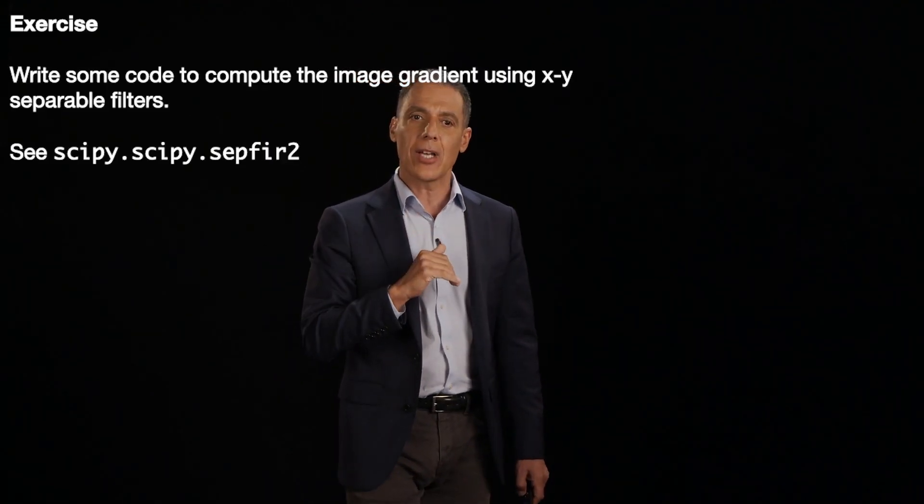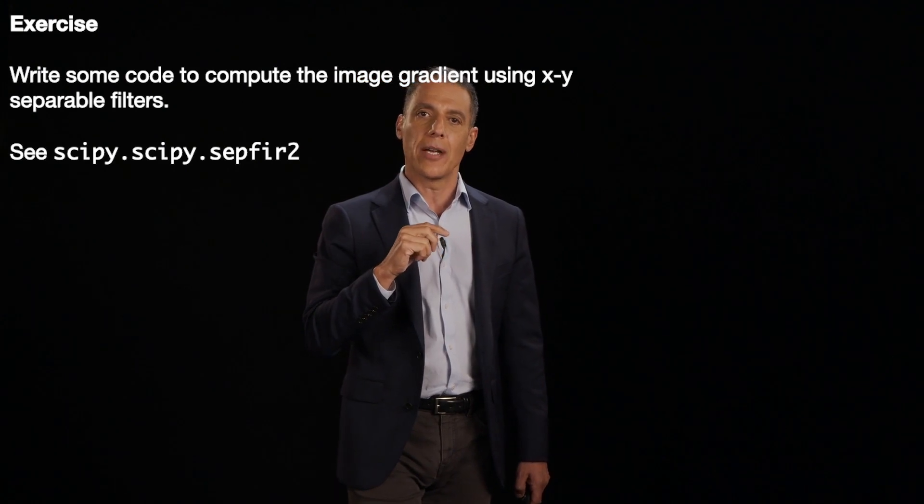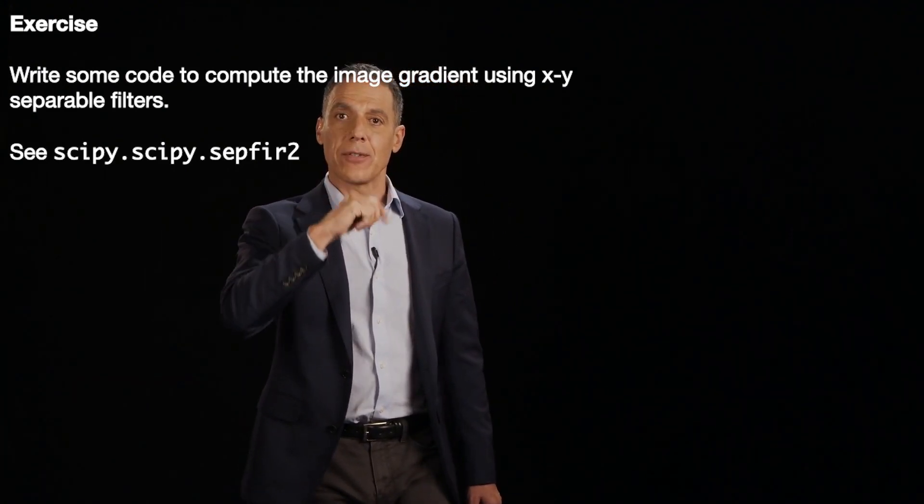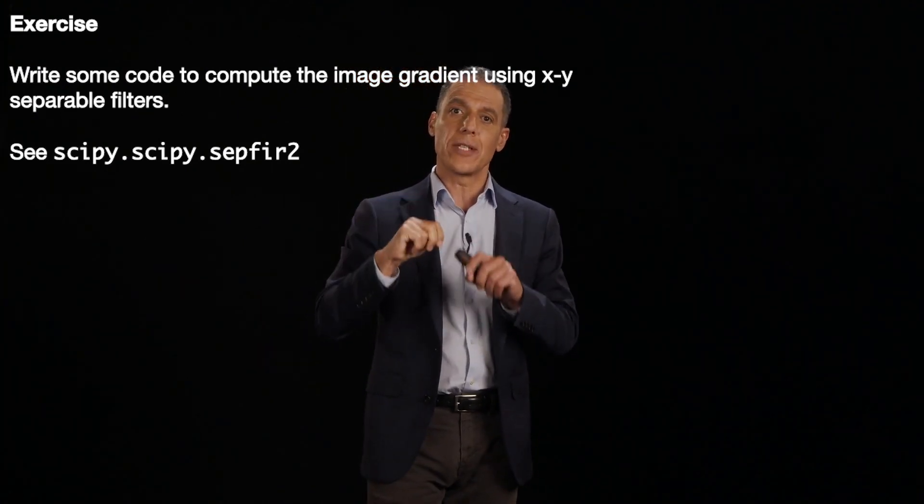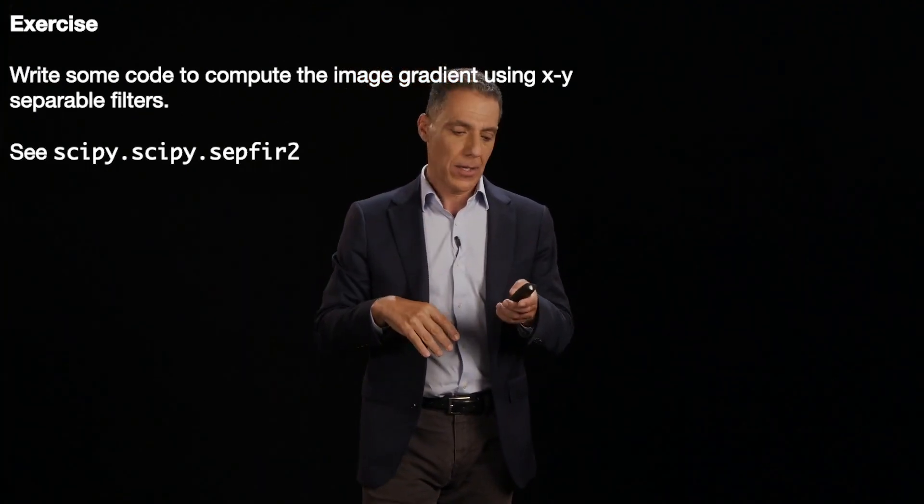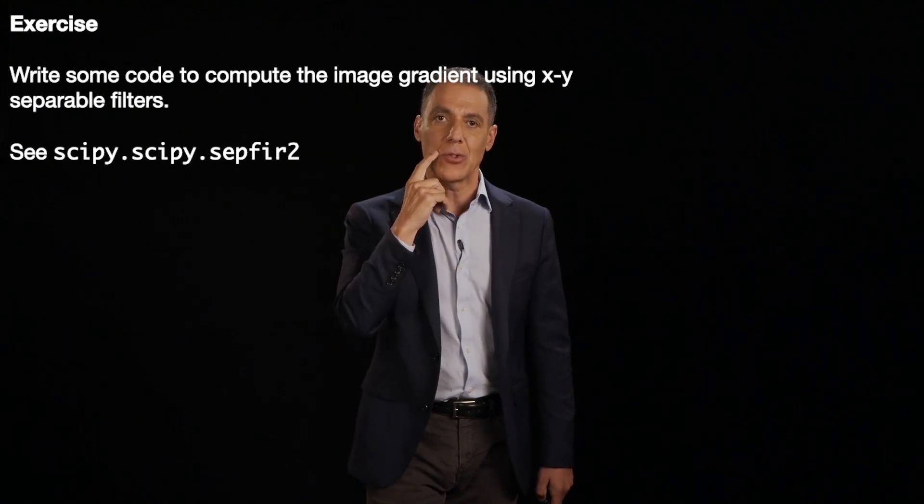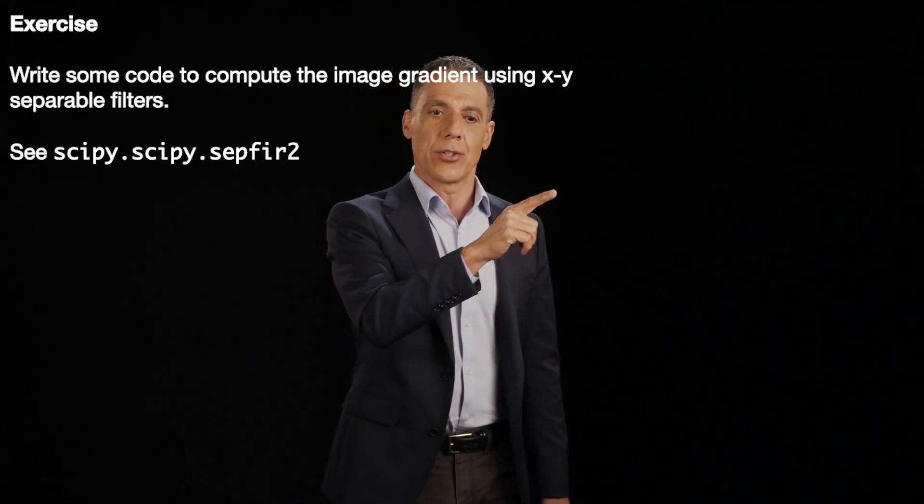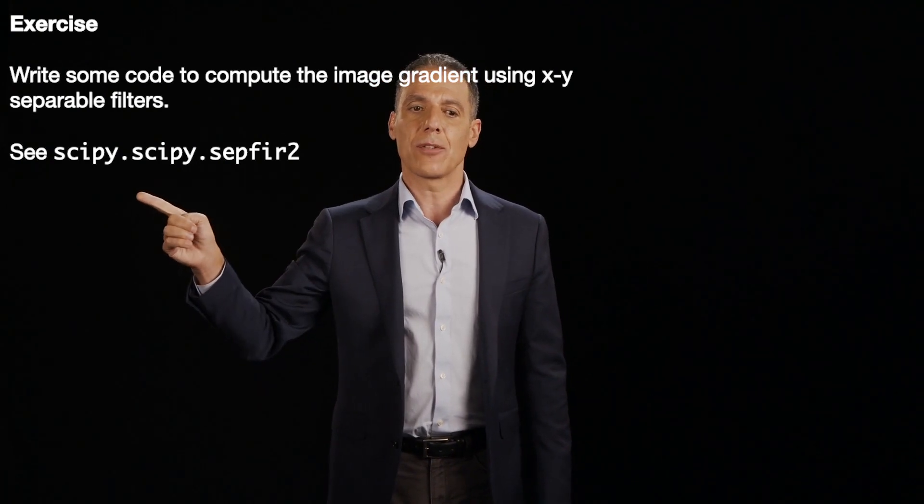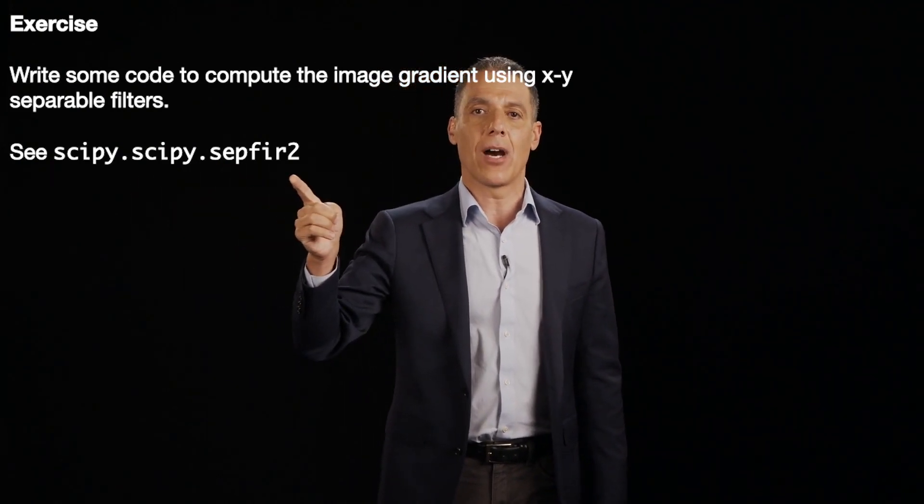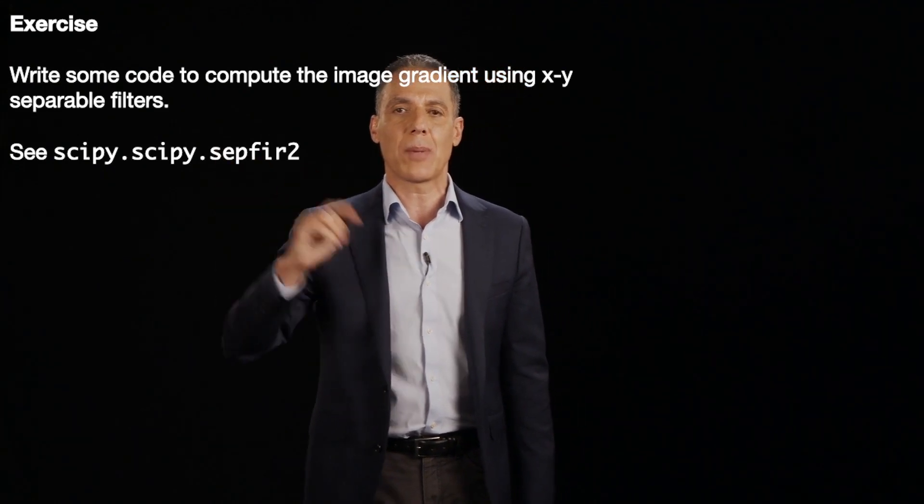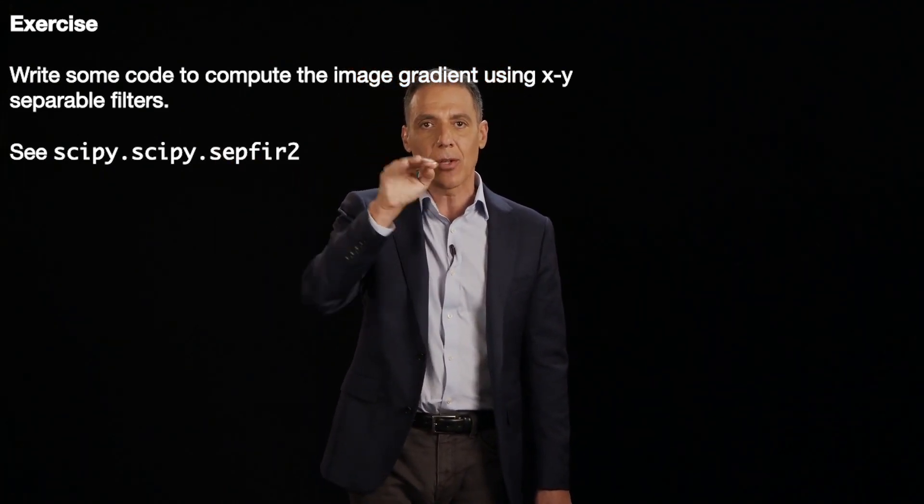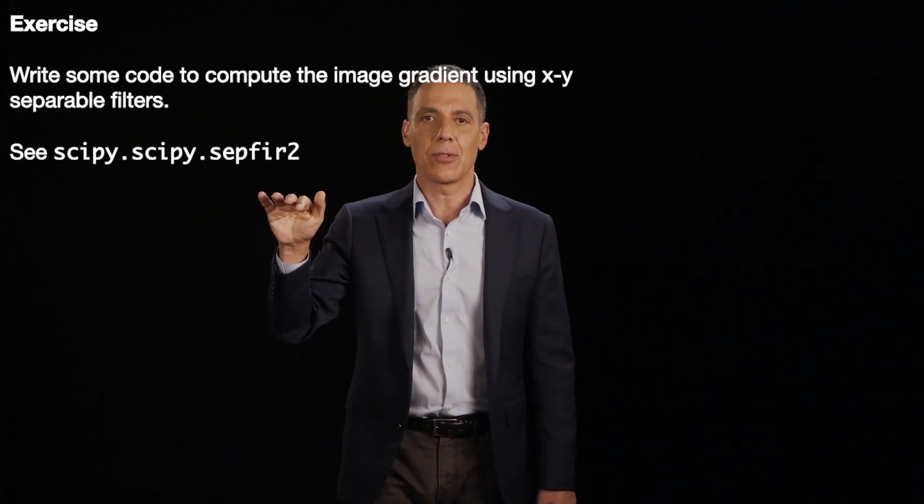Alright. So we're going to do another exercise, and I'm going to have you take in a 2D filter, which is our gradient filter, figure out what are the two 1D filters, and then do the pair of convolutions to compute the image gradient. And here's what you're going to do. You're going to use this convolution called SciPy SEP FIR, which stands for Finite Impulse Response. And it will take as input 1D filters in the horizontal and vertical directions and then do the convolutions for you.